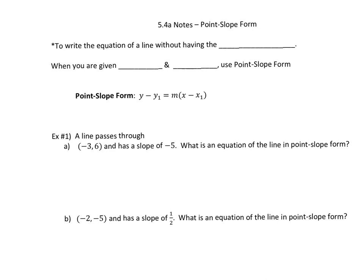y = mx + b is slope-intercept form. Today we're going to do a different form, but it's still the equation of a line — you still get a line out of what we're doing.